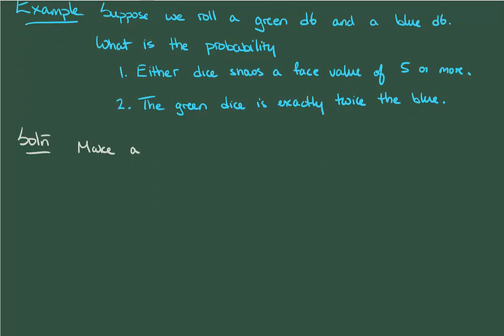And the second is the probability that the green dice shows exactly twice the value of the blue dice. Like I mentioned, we could do this using counting, but I'm going to use a table to do it. Let's let the top row indicate the roll of the green dice, and the left column indicate the roll of the blue dice.